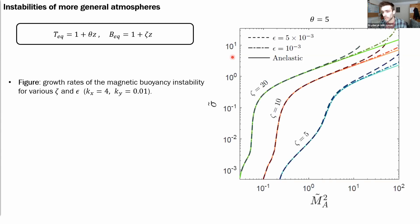I'm showing the growth rates of the instability against this Mach number for various field gradients, with solid lines being the anelastic solutions and the two kinds of dashed lines are the compressible solutions for different values of epsilon.